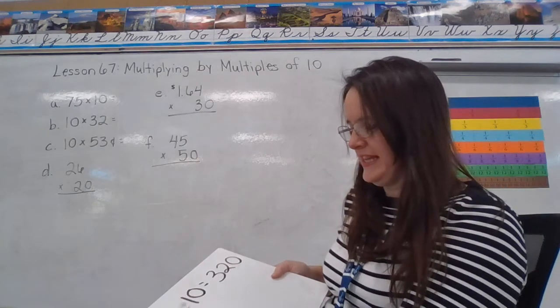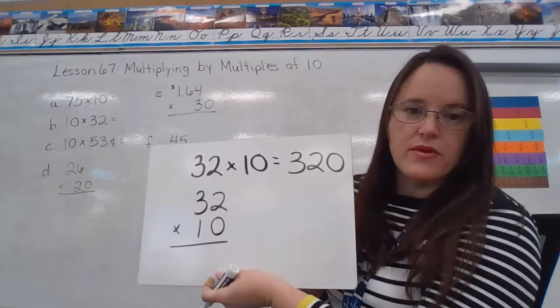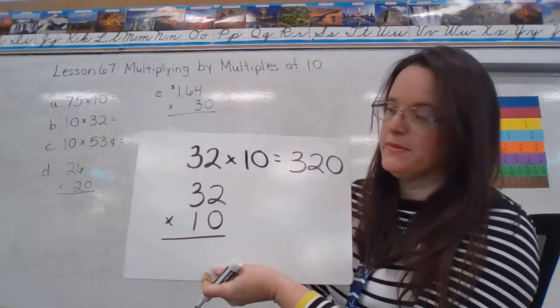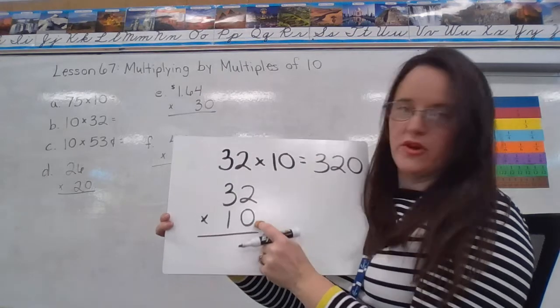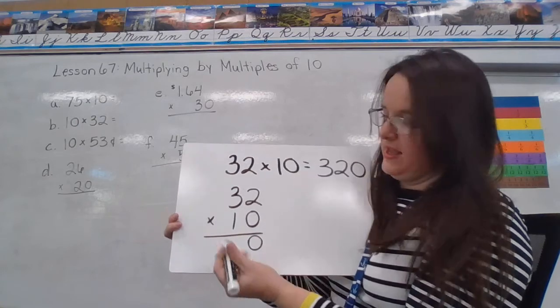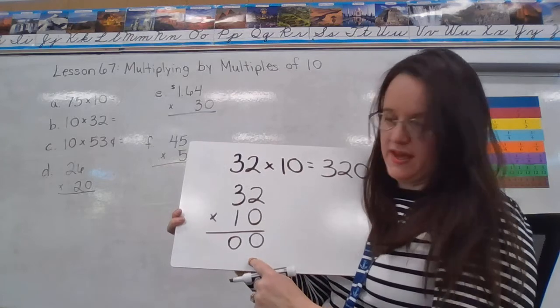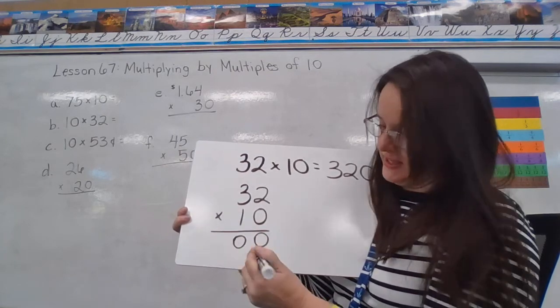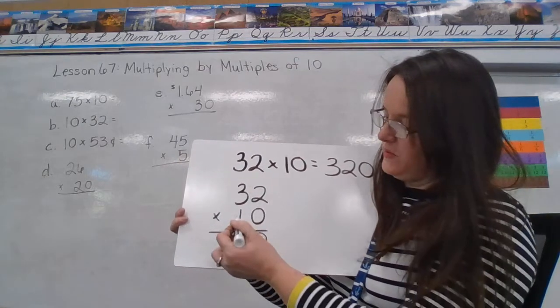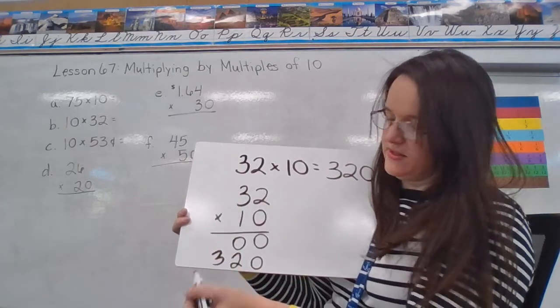So I'm going to rewrite this vertically. 32 times 10. And then we're going to solve it as if it were a normal 2 digit by 2 digit multiplication problem. So remember, we start with our ones place. So we would do 0 times 2 is 0, and then 0 times 3 is 0. Then we come down here, because now we're multiplying times our tens place, so we have to put a placeholder there in the ones of a 0. And then we do 1 times 2 is 2, 1 times 3 is 3.